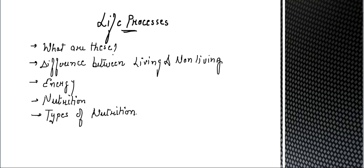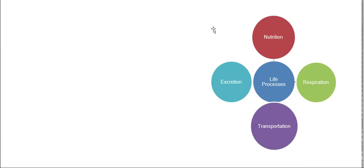The first point is: what are life processes? The processes which are needed for the maintenance of the living state of living beings are called life processes. They are necessary, and for them we have organ systems — like the excretory system and the digestive system. The life processes are nutrition, excretion, respiration, and transportation.